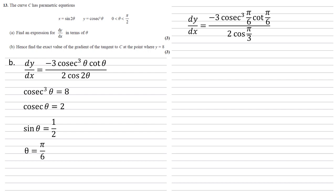Now remembering that cosec is just 1 over sine, cot is 1 over tan, we can put those into our calculator to get minus 3 times by 2 cubed times by root 3 for the cot, and that's all over 2 times a half for the cos π over 3.